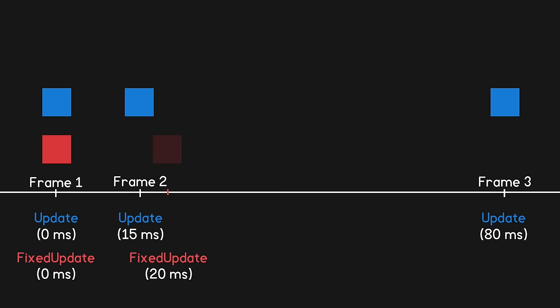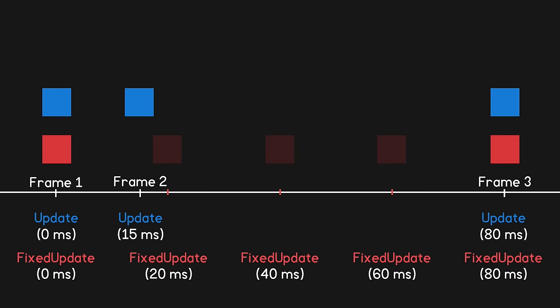Note that the object's new position will not have been drawn onto the screen yet, because fixedUpdate was called after the last frame was drawn. FixedUpdate continues to be called every 20ms, and the object's position is updated inside of the physics engine. Finally, at the 80ms mark, the object's position is drawn onto the screen.